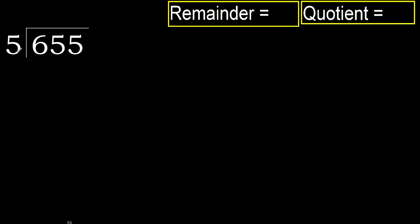655 divided by 5. 6 is not less, therefore with 6, 5 — multiply by which number is nearest to 6 but not greater. 5 multiplied by 2 is 10; 10 is greater. Multiply by 1. 5 is not greater.